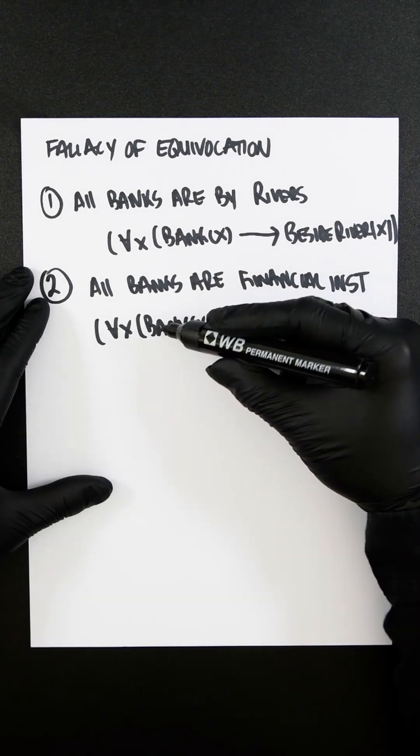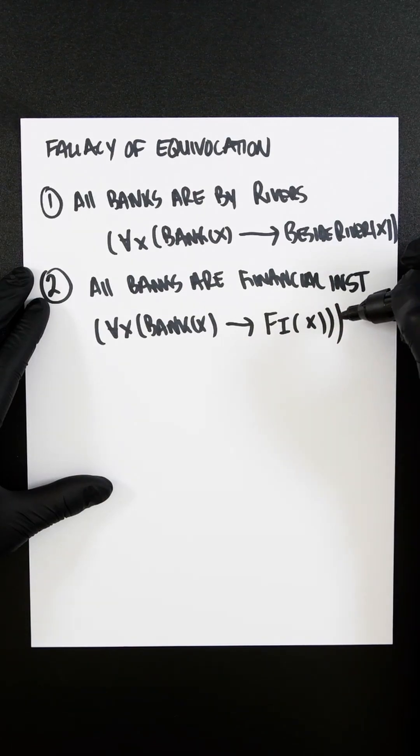So if x is a bank, then x is a financial institution.